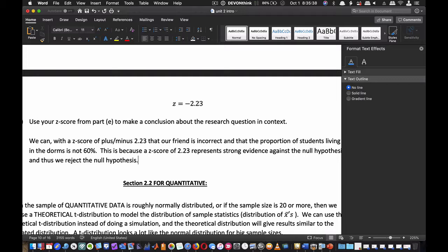A z-score of 2.23 represents strong evidence against the null hypothesis, so we reject it. All we know is it's not 60%—it doesn't mean we're at exactly 51%. It just means 60% is not correct, because our sample was large enough to run this theory-based analysis.